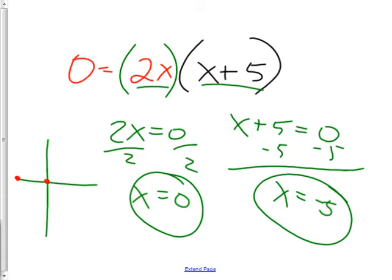So my two x-intercepts are zero and negative five — here and here on the graph. Now, is this going to be a mountain shape or a valley shape — a U shape? It's a valley, because what would give me a tip that it would have been a mountain? There'd be a negative in front. So then, what's the other thing important to know? The stretch factor would be important — but I don't see any stretch factor. Should you consider that two to be a stretch factor?